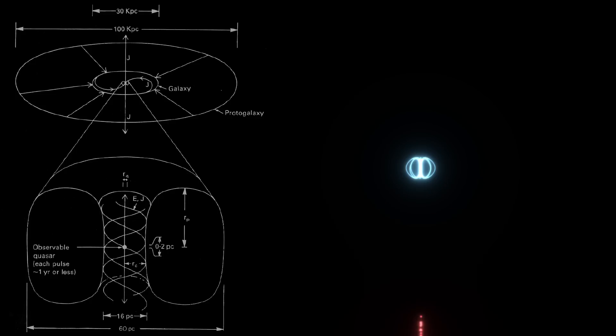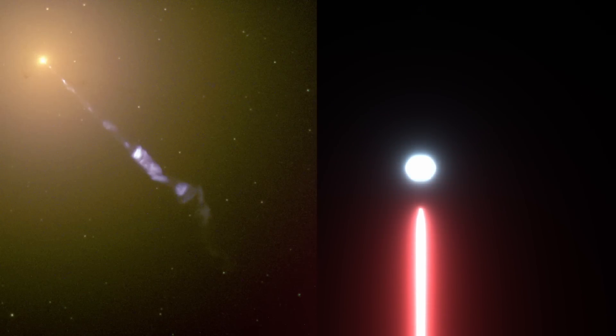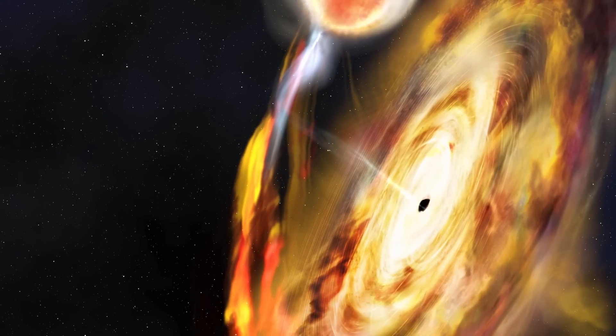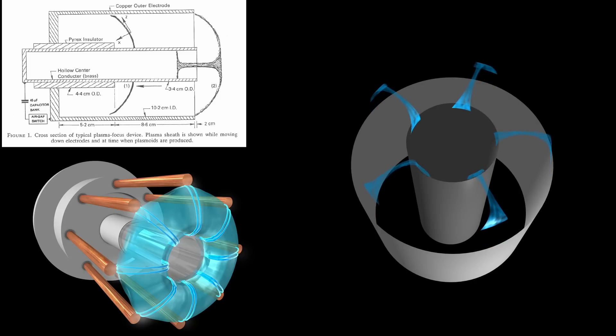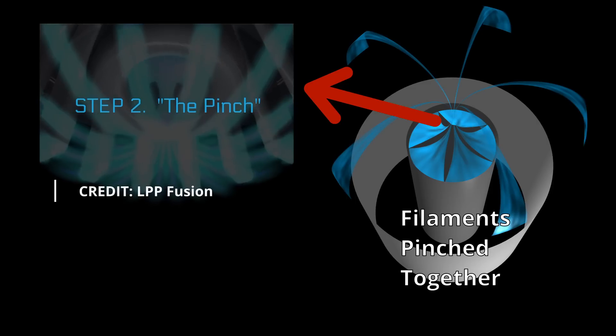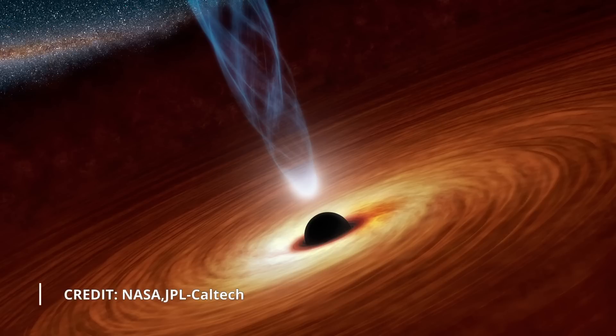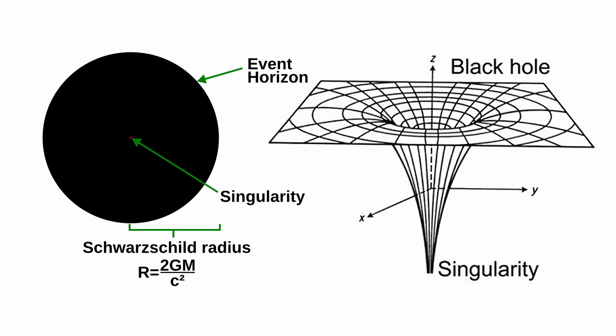While direct observation of a plasmoid represents the ultimate goal, the sheer energy and intensity involved makes such observations challenging. The difficulty in observing is not unique to Lerner's model. It also extends to the concept of supermassive black holes. Despite their theoretical prominence, no direct observation of a black hole has been made. However, Lerner's model gains traction due to its reliance on experimental evidence from laboratory plasma physics experiments. These experiments showcase phenomena like plasma self-compression and plasmoid formation, offering crucial insights into plasma behaviour under specific conditions and serve to bolster theoretical constructs like Lerner's. In contrast, the concept of black holes, particularly the singularity at their core, remains largely theoretical and lacks direct experimental validation. Although substantial indirect evidence such as gravitational effects on surrounding matter support their existence, the singularity itself remains a mathematical construct derived from general relativity. The inability to create or directly observe a singularity underscores the theoretical nature of black holes.